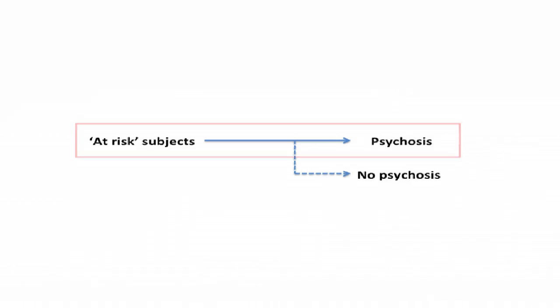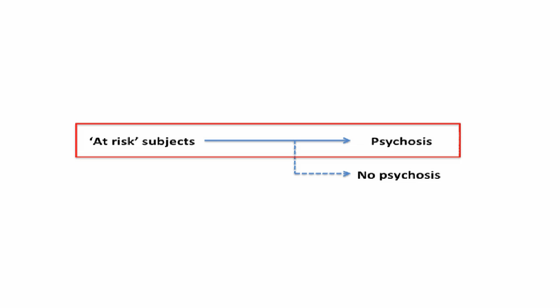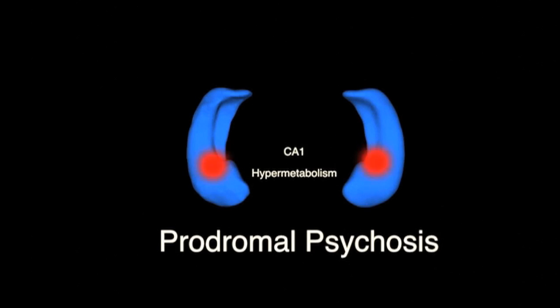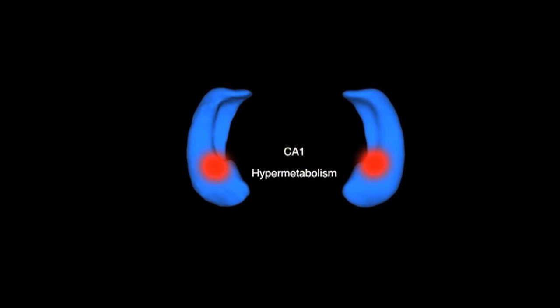What we found at time one, comparing prodromal subjects who subsequently progressed to psychosis versus those who did not, is that the subjects who would subsequently progress over two and a half years had focal hypermetabolism in a select hippocampal sub-region — the CA1 subfield of the hippocampus. This was found in the absence of structural changes; there was no atrophy of the hippocampus at that period of time.